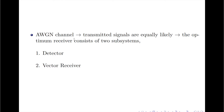For an AWGN channel and for the case when the transmitted signals S_i of t are equally likely, the optimum receiver consists of two subsystems. The first is called the detector and the second is called the vector receiver. Let us now briefly discuss each of these subsystems.